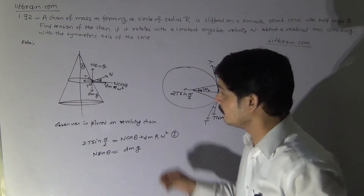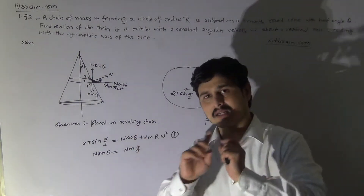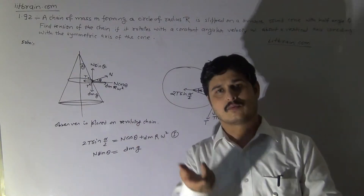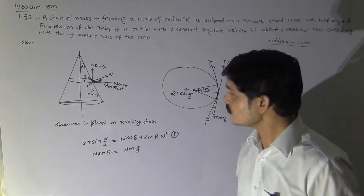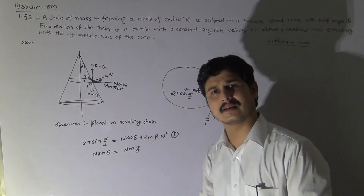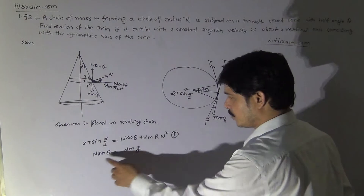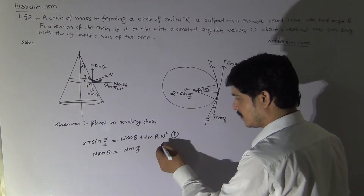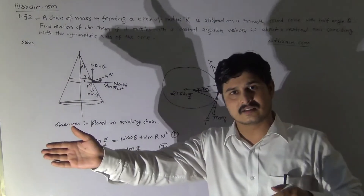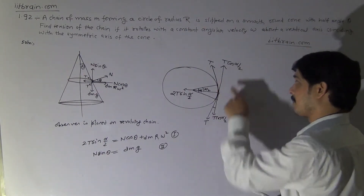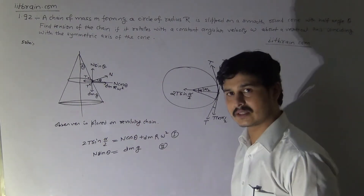We balance forces in three directions: inward-outward, upward-downward, and tangential. Along the tangential direction the forces are already balanced, so no third equation is needed. Only two equations are required.